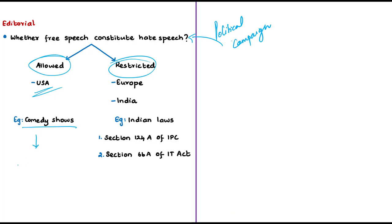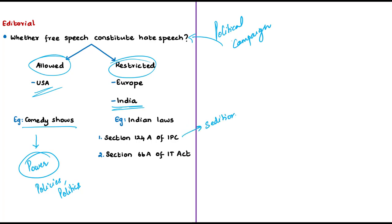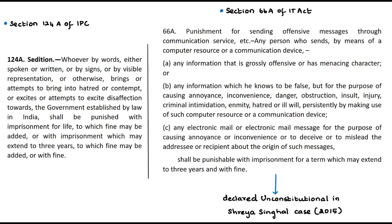In contrast to the US model, India does not allow such blanket freedom of speech. One example is sedition, a criminal offense under Section 124A of the Indian Penal Code. According to this section, whoever brings or attempts to bring hatred, contempt, or disaffection by words spoken or written, or by signs or any visual representation towards the government or any law established by the government, can be punished with imprisonment for life with fine, or imprisonment up to three years with fine. In India, showing disaffection by words alone can be brought under sedition — our country's model is different from the US model.